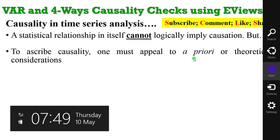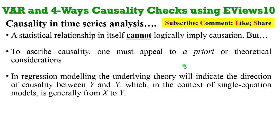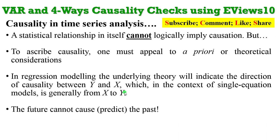To ascribe causality, one must appeal to either a priori expectation or theoretical consideration. In regression modeling, the underlying theory will indicate the direction of causality between Y and X, which in the context of a single equation model is generally from X to Y — X being the regressor, the independent variable or explanatory variable, and Y being the regressant, the dependent variable. The future of X cannot predict the past value of Y, so the past values of X will forecast future values of Y.